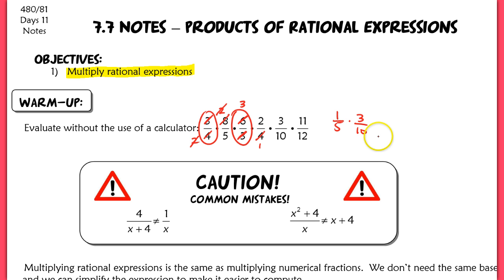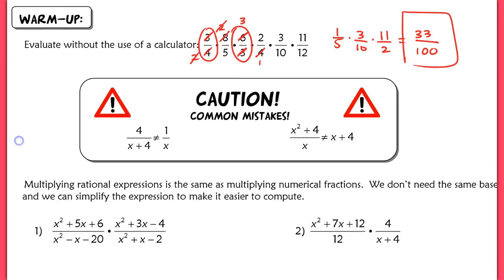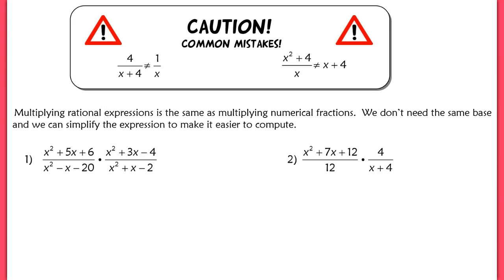All of this simplified to a much easier product. Multiplying across gives 33 over 100. So the same concepts we will now apply to finding products of rational expressions. When multiplying rational expressions, you use the same methods as with numerical fractions — you don't need the same base, and you can simplify the expression to make it easier to compute.